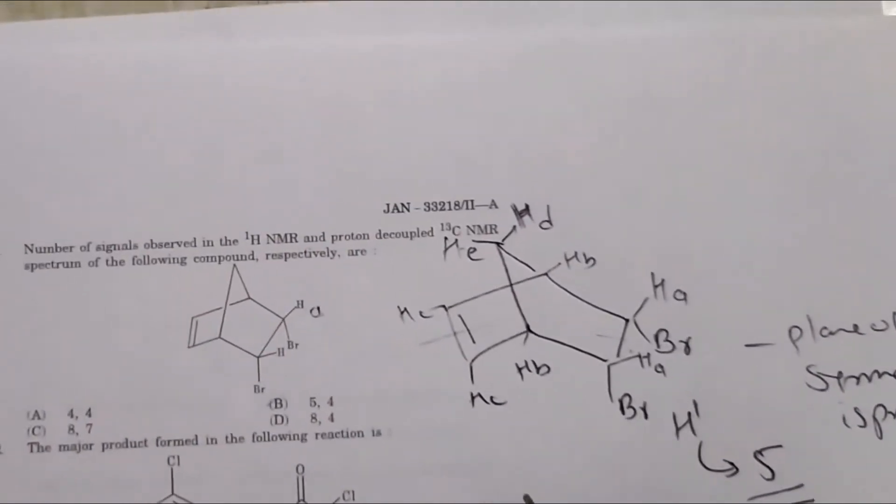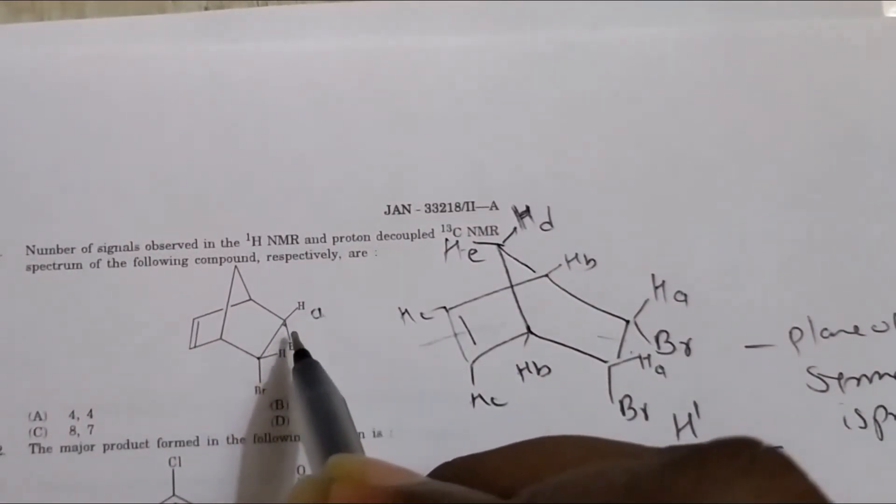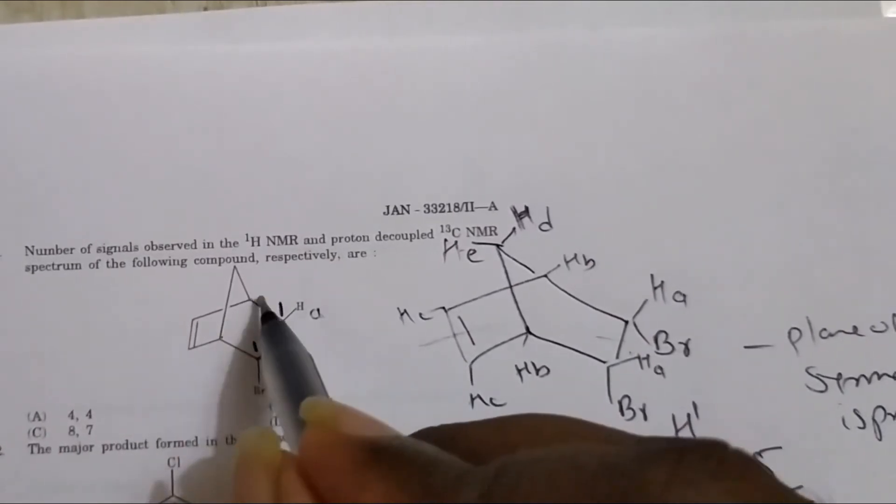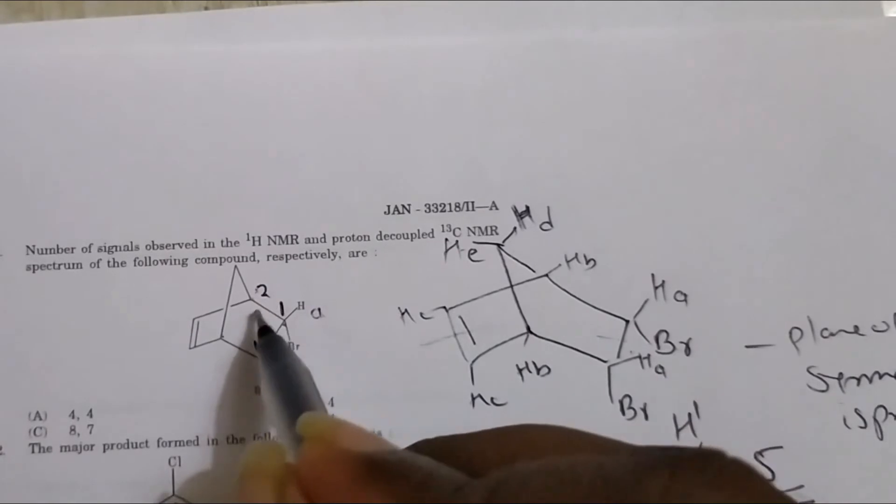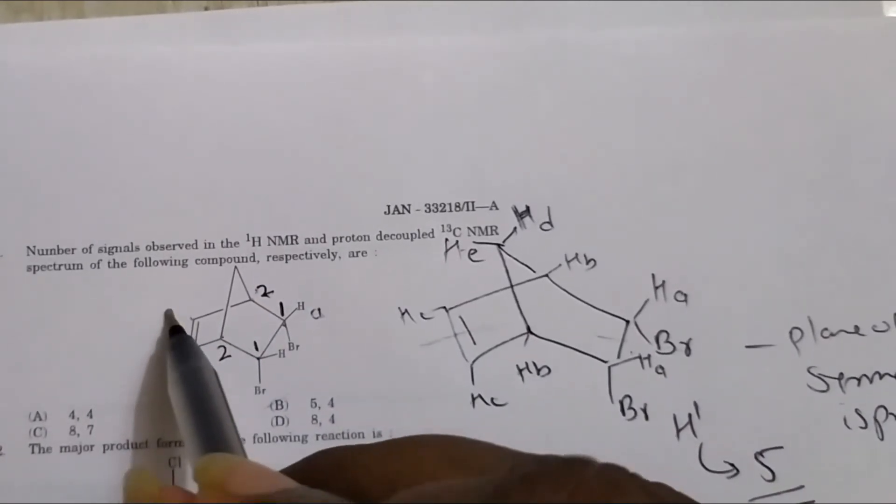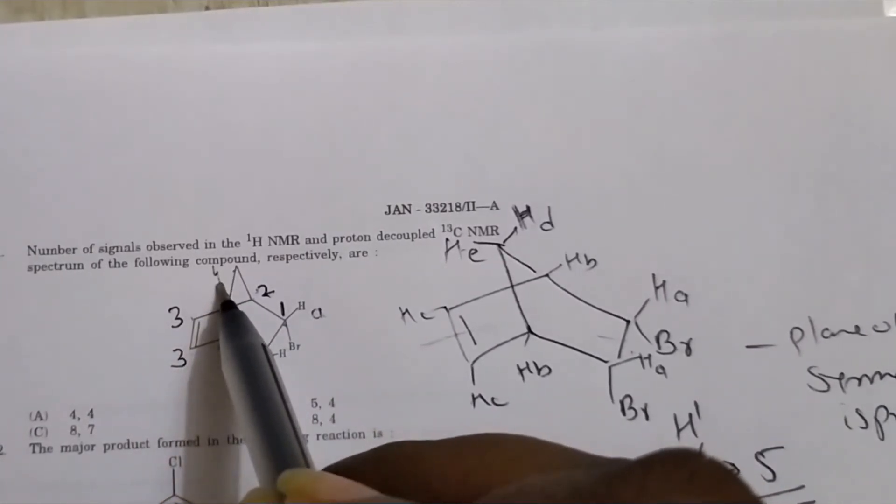Now we go for 13C. So this carbon, this carbon is the same, so we write as 1. This is 1. This carbon, this carbon is the same, we write 2. And this carbon, this carbon is the same, so we write 3 and 3, and this carbon is 4.